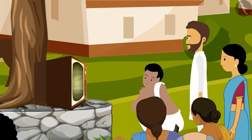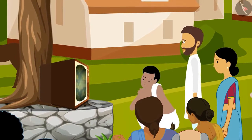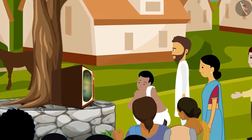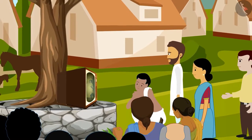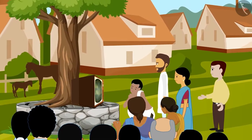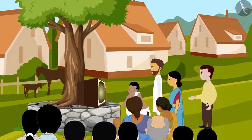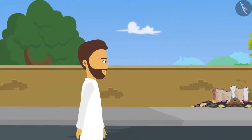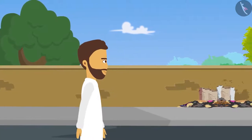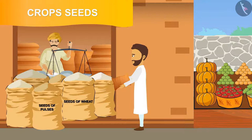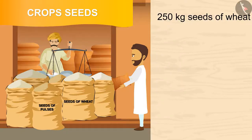He watched on the Krishidarshan program on Panchayat Ghar's TV that the fertile capacity of land reduces due to years of farming. He also learned that if he grows pulses along with wheat, the soil will become fertile again. Today Karim Bhai is very happy and is going to buy seeds — he bought 250 kg of wheat seeds and 5 kg of pulse seeds.